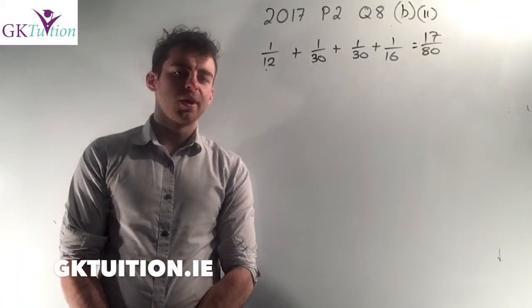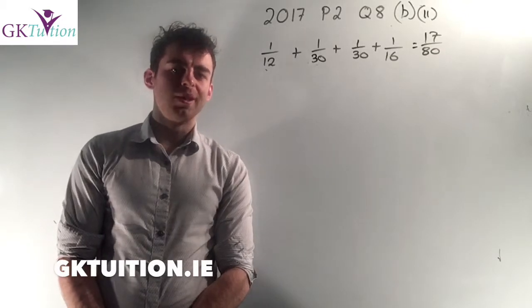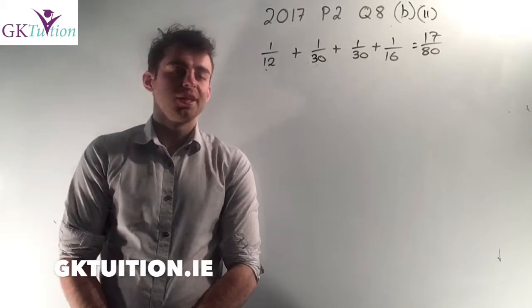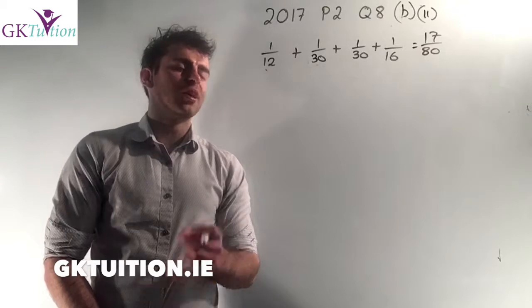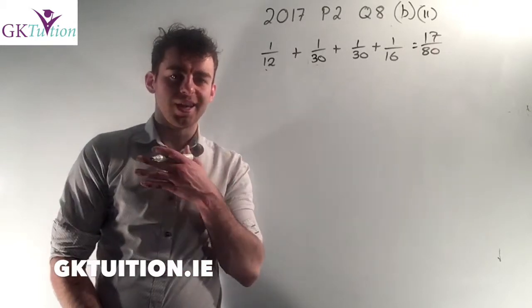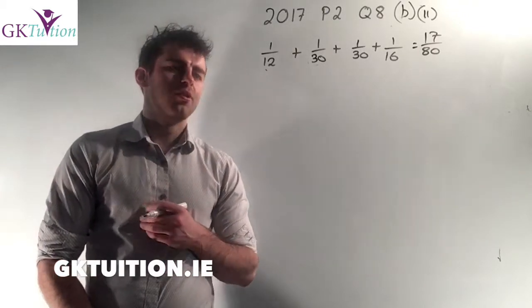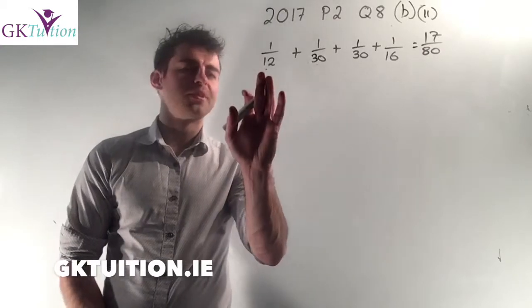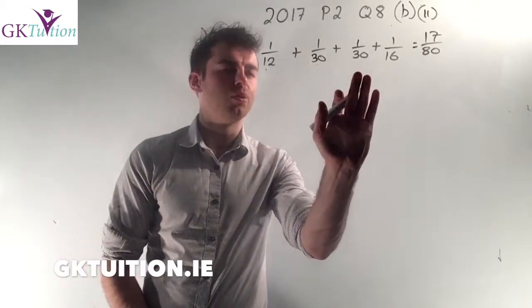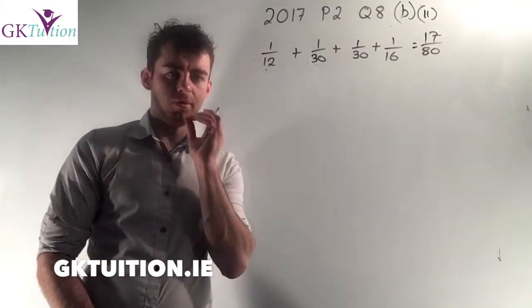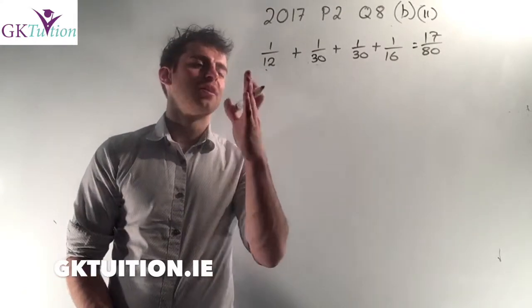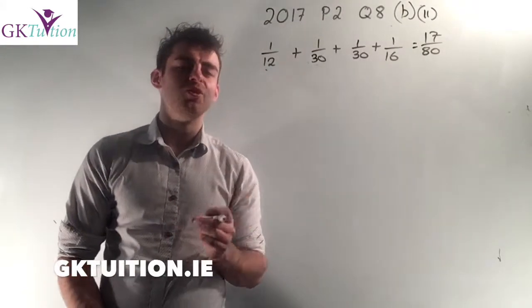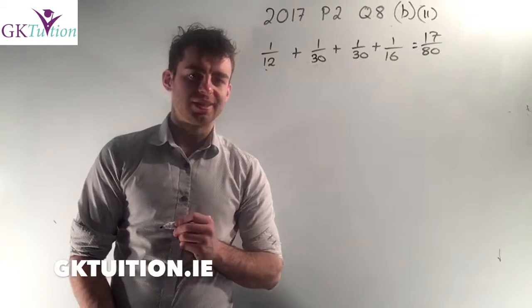In B part two of this question we're asked to work out the probability that you're late for school. What are the chances that you're late for school? You need to realize that there's four different branches that end in you being late for school. You want to work out the chances that the first one happens or the second one or the third one or the fourth one. In probability OR means that we add. So you get the four different branches that end in you being late, add them together and you get seventeen over eighty.